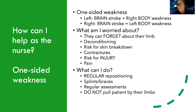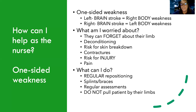They can have decreased sensation — numbness, tingling, paresthesias — but they can also have hyperesthesia, where they experience intense pain, almost like their limb is on fire. As the nurse, you can help by doing regular positioning, using splints and braces, performing regular assessments, and making sure never to pull the patient by that limb. When repositioning, never grab them by the weak limb, as it's more at risk for injury.